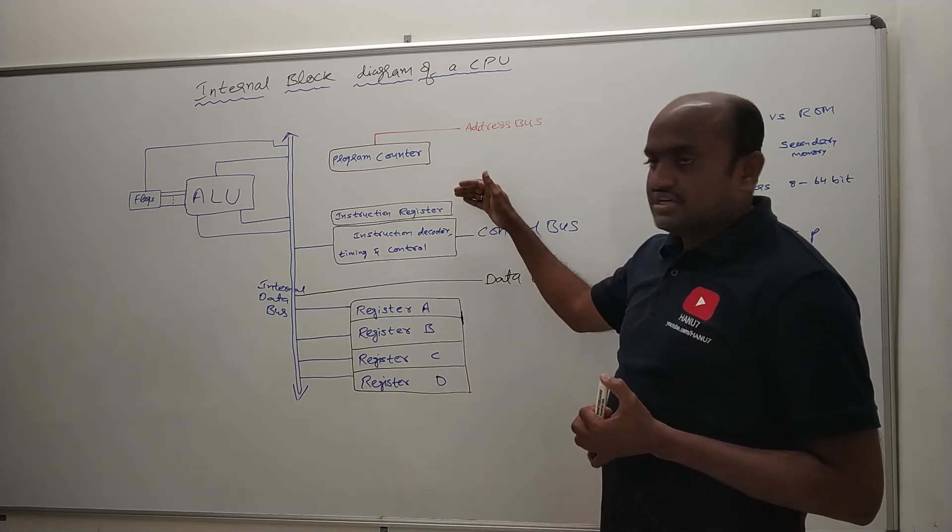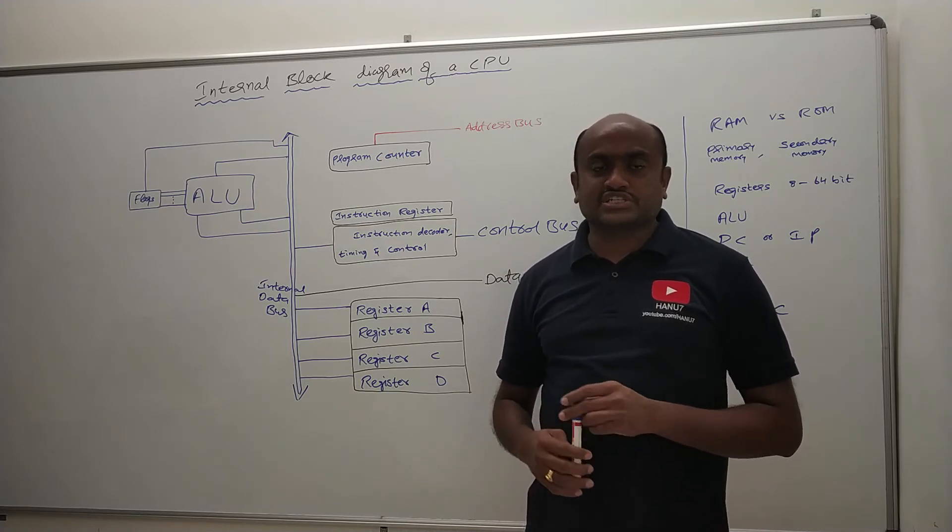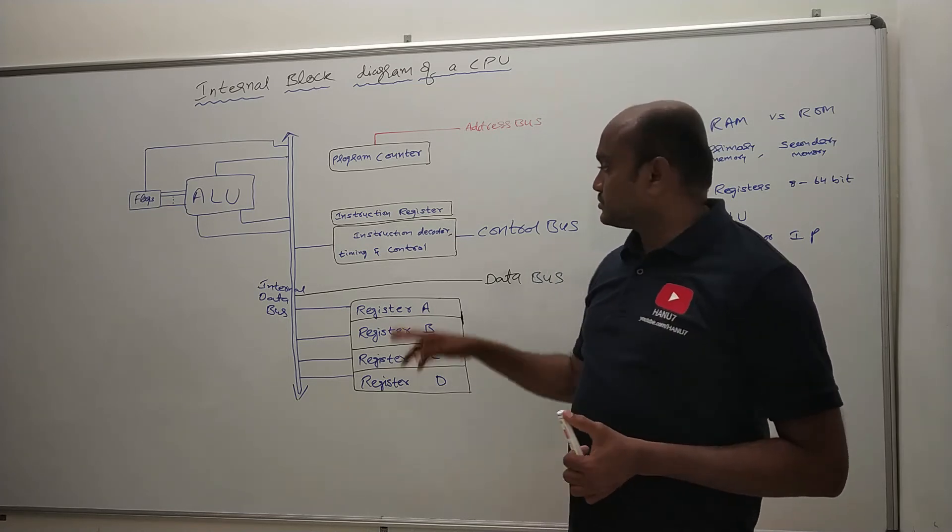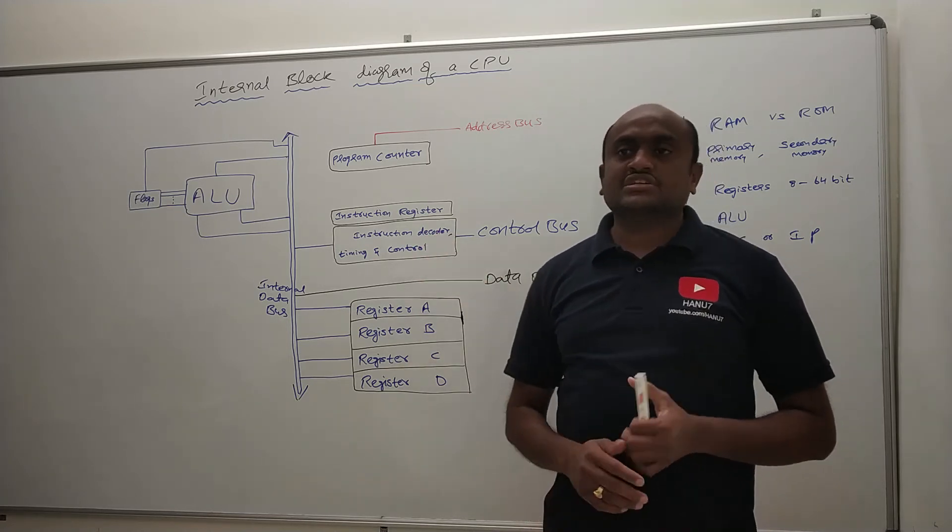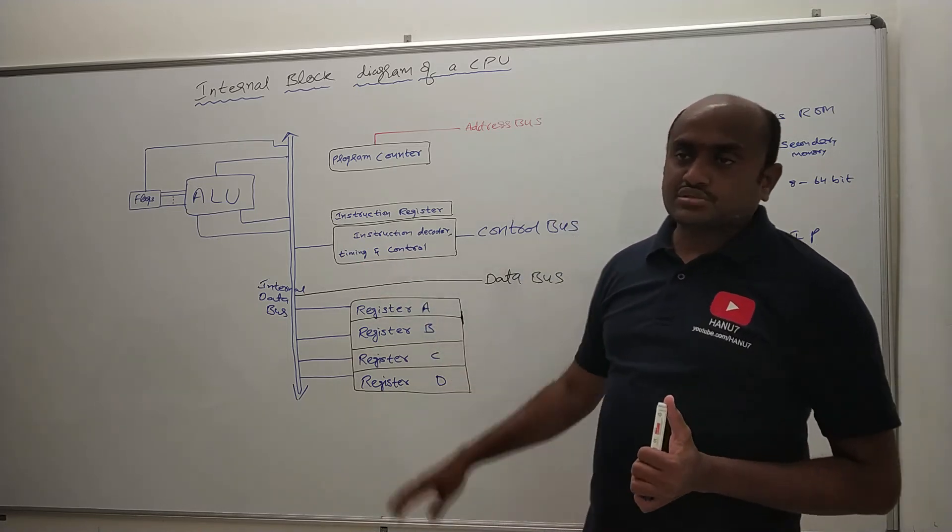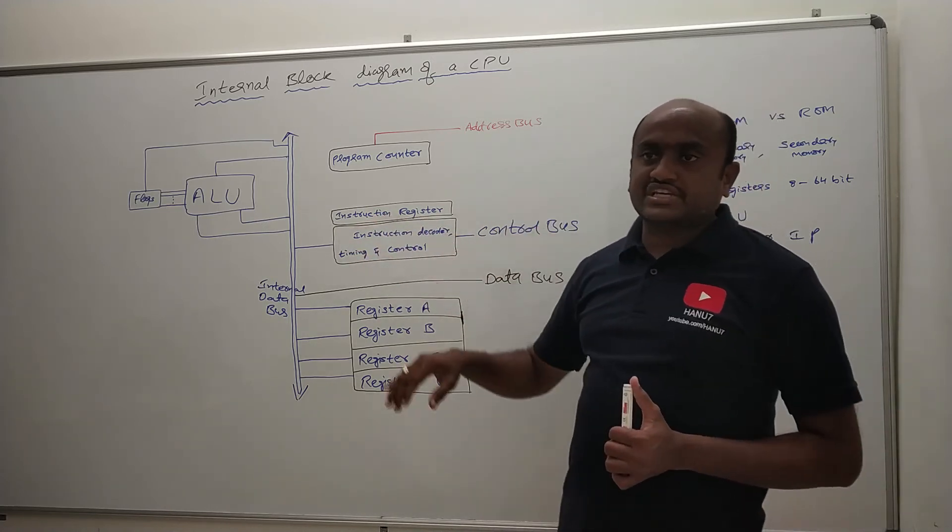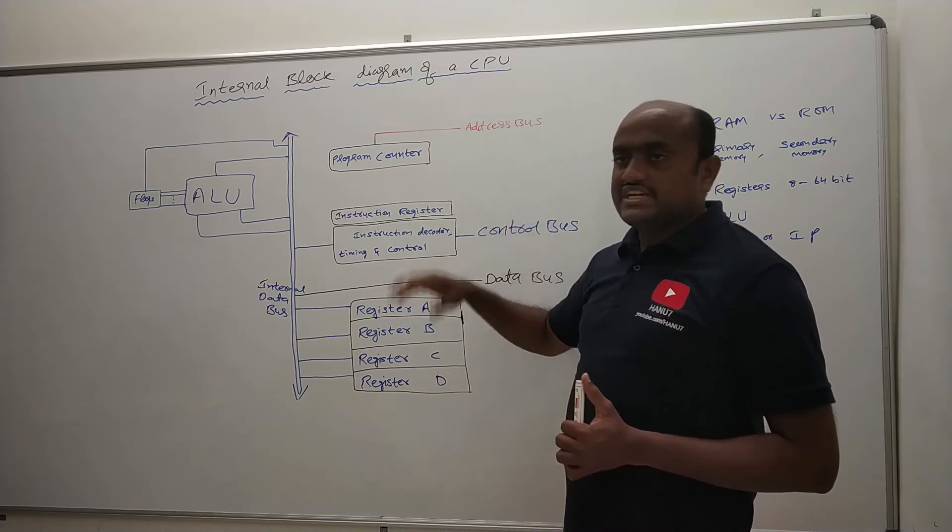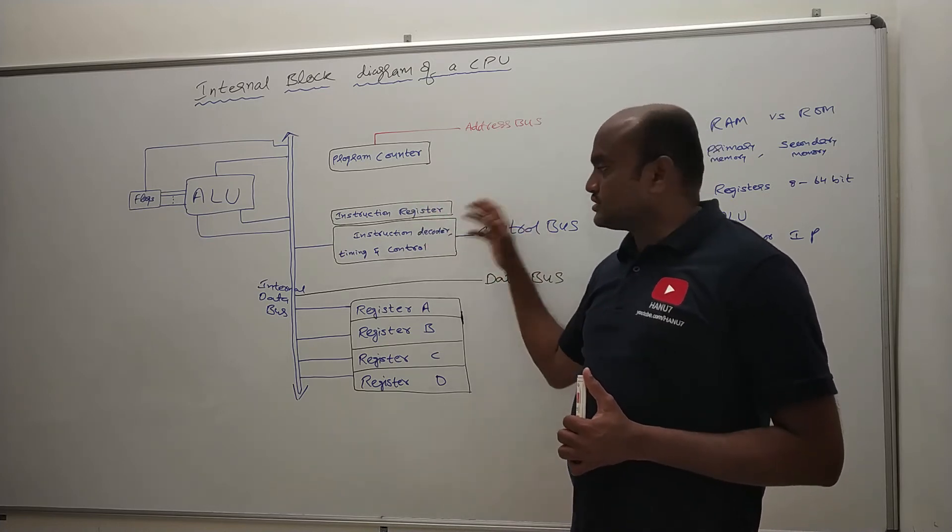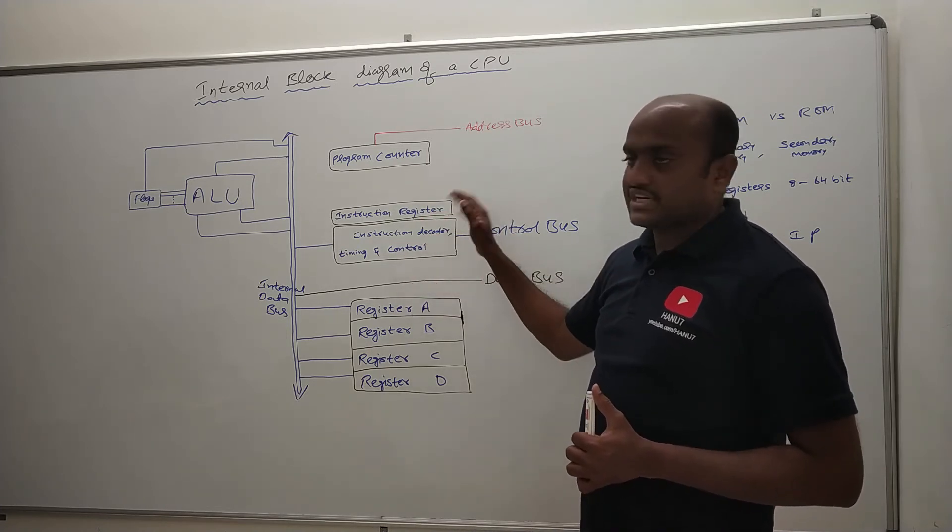And whatever the instruction that we have written, it is a human understandable language. So it has to be converted into a machine understandable format. So that can be done by instruction decoder with the help of timing and control circuitry. So this particular block is connected to control bus. So the control bus will decide whether we have to read or whether we have to write from IO devices or memory devices based on the timing and control signals. Instructions will be decoded from IR register.